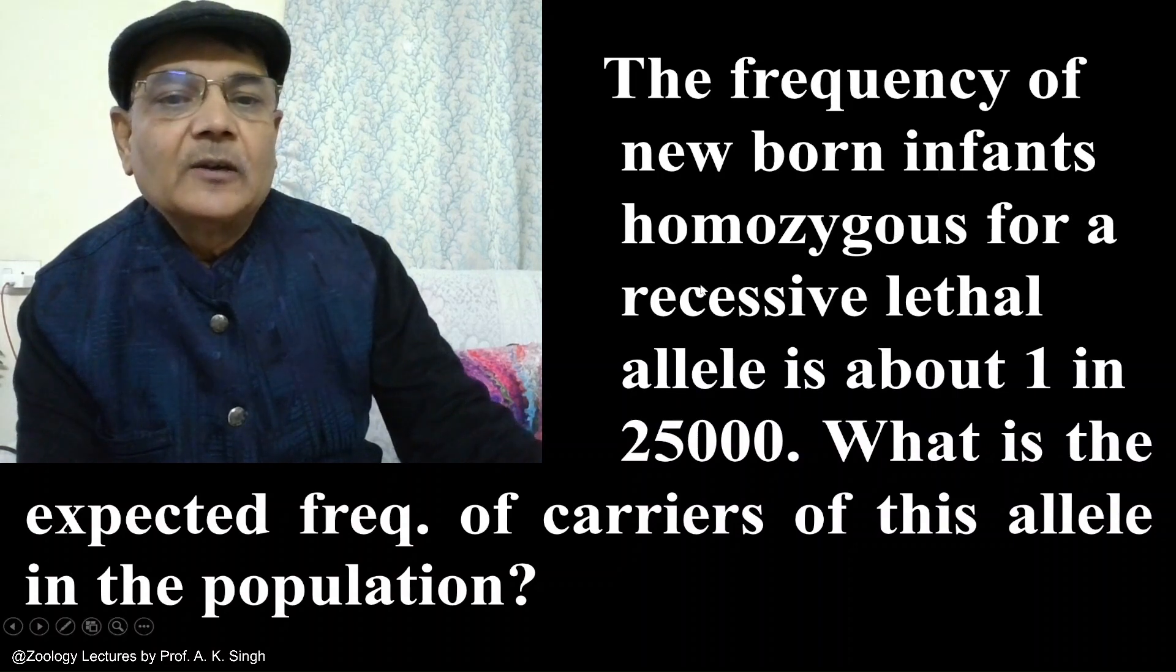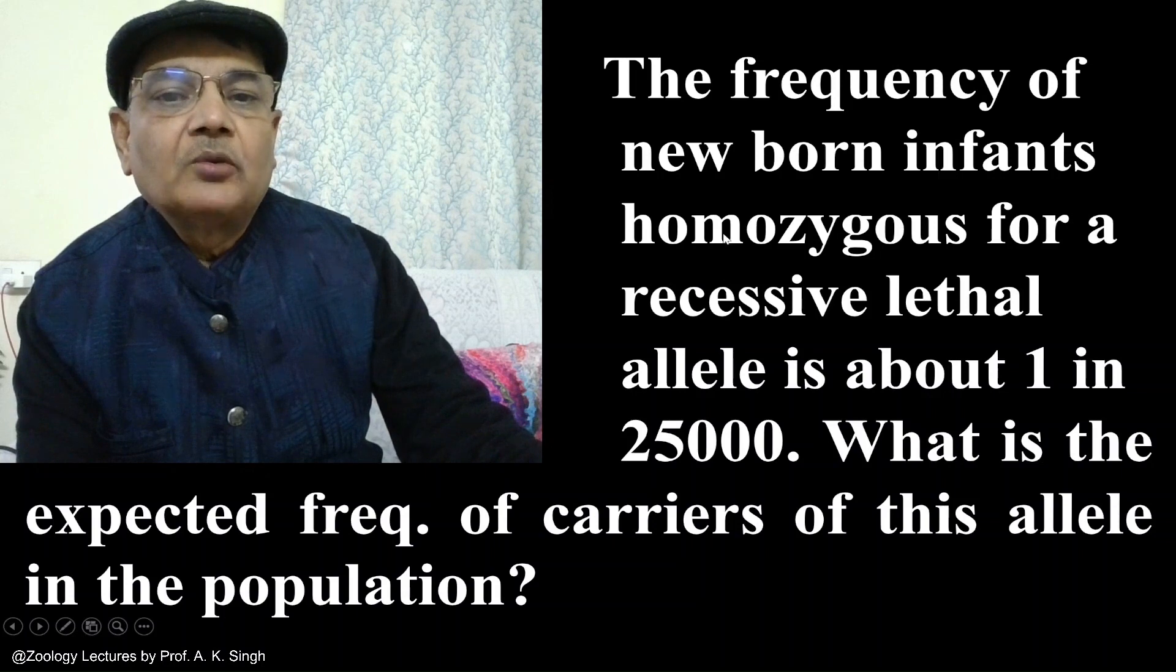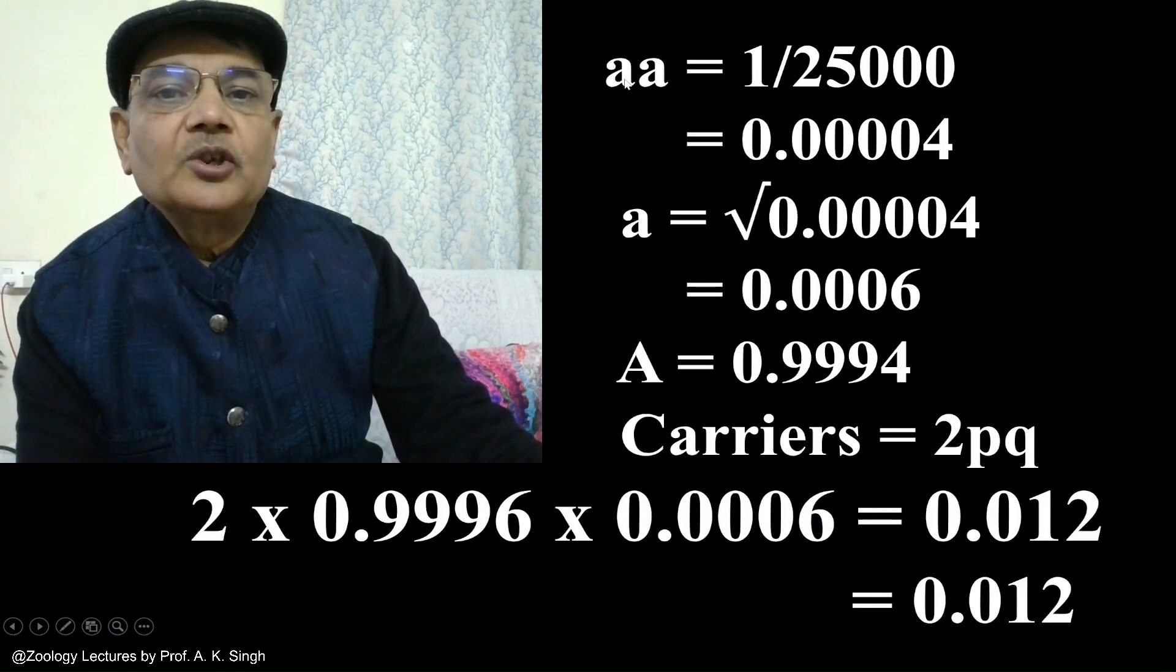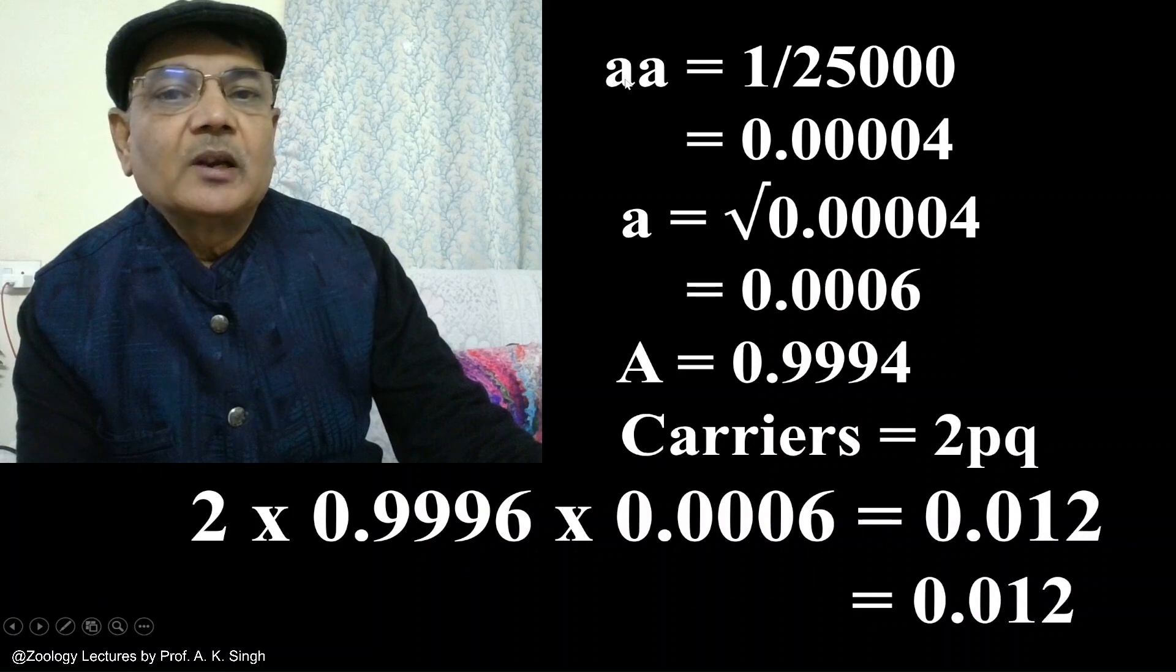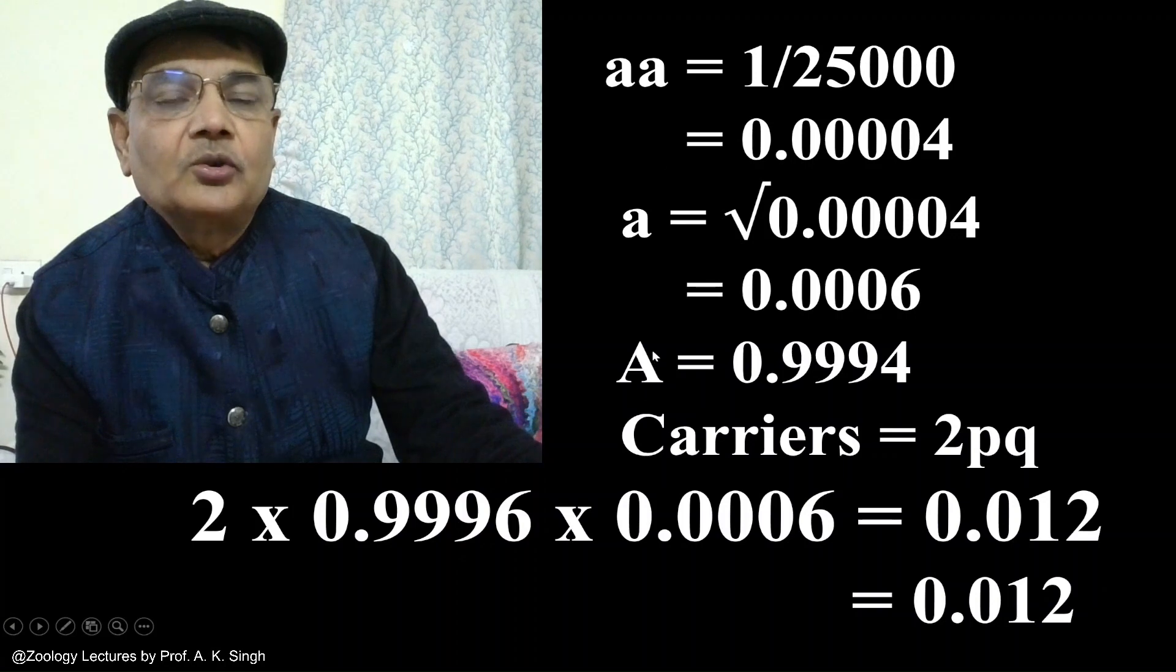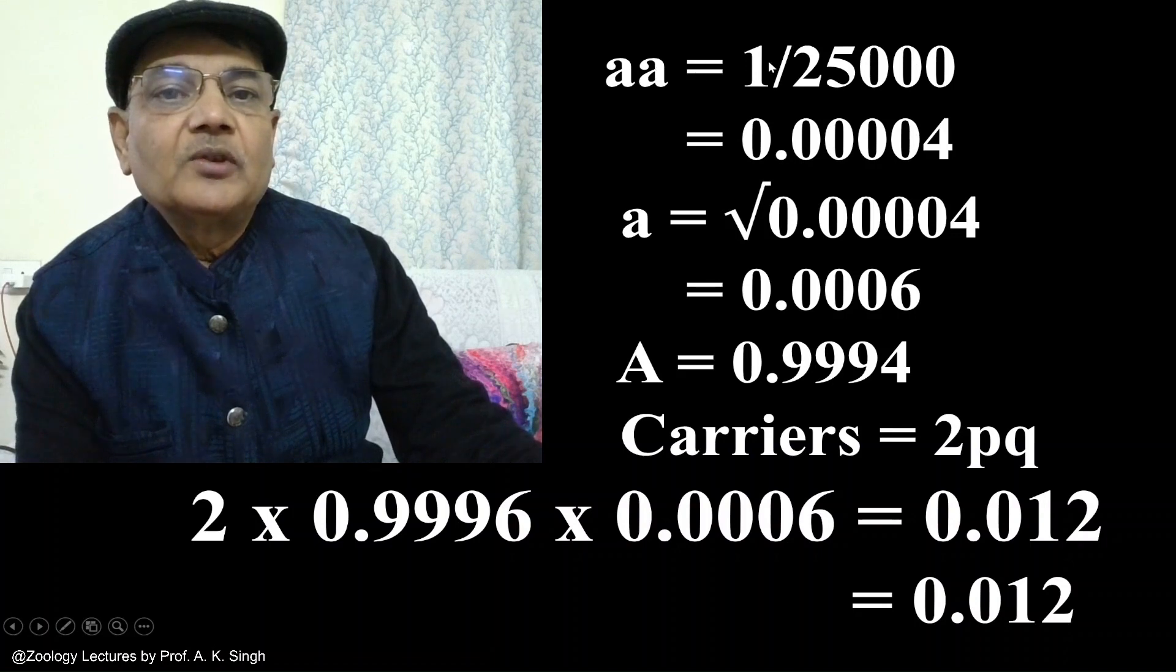Those individuals who are homozygous for the lethal allele will be represented as small a small a. Suppose small a is the recessive lethal allele and the normal allele is capital A. So those who are sufferers are small a small a and their frequency is 1 out of 25,000, which comes to 0.00004.